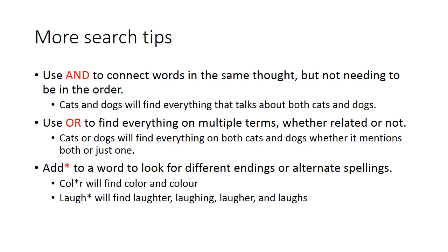You can use OR to find everything on multiple terms, whether those terms are related or not. So in the same example, we could use "cats OR dogs" to find everything on both cats and dogs without necessarily finding everything on just "cat dogs."